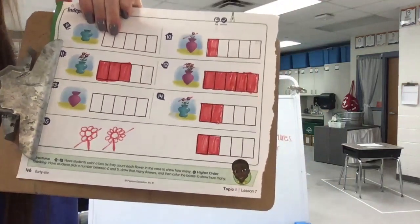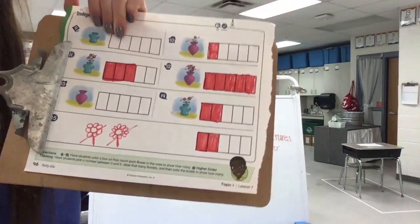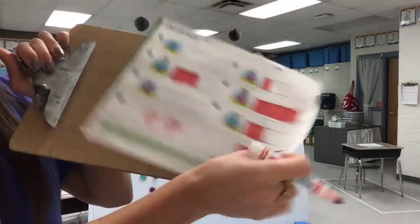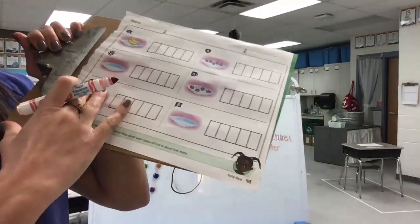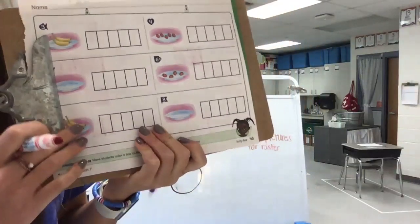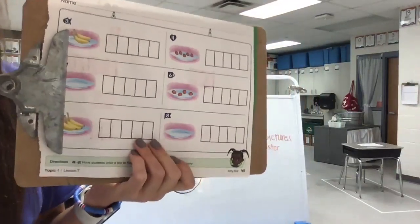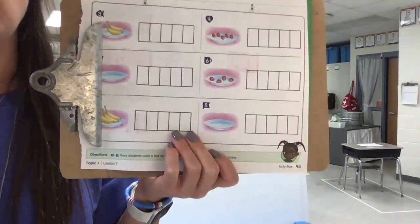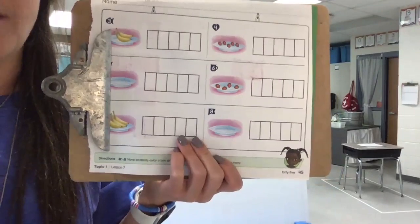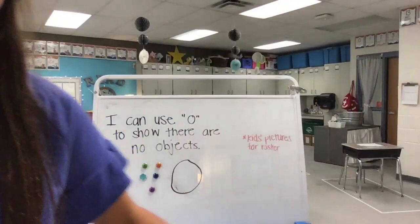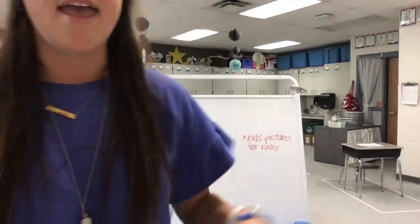If you need more time to do that, go ahead and pause the video. If you are ready, you are going to flip back to page 45 and you are going to count, mark out, and color to match to show how many pieces of food are on each plate. What do you do if there are zero? You leave the boxes blank. Good job today, friends — keep working towards hitting your learning target and I will see you again for math tomorrow.